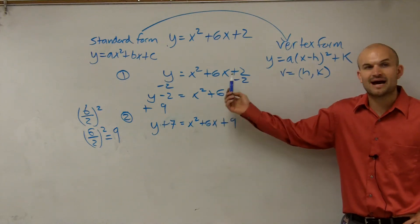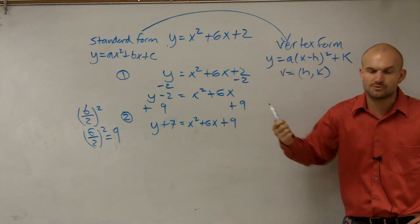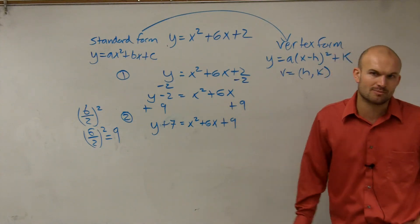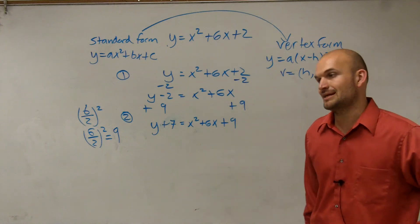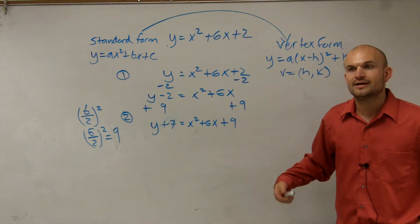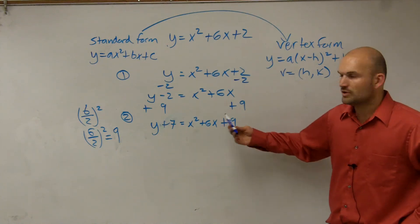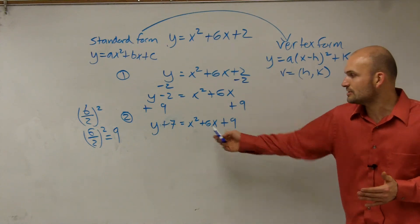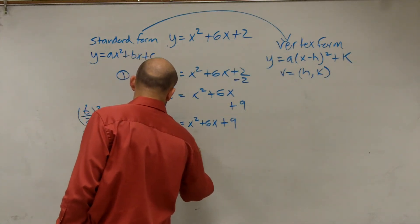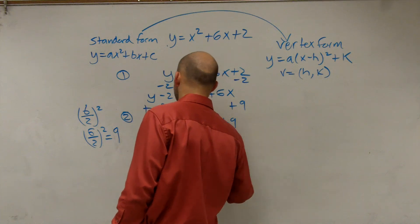Now, since what we did is by doing the b divided by 2 squared, what we did is we created a perfect square trinomial. And what's so important, Isabelina, about creating a perfect square trinomial is you can factor it to a binomial squared. If you forget that, Katie, what you can do is just factor this on your own. But you guys will factor this,